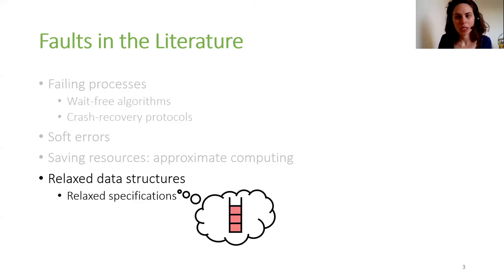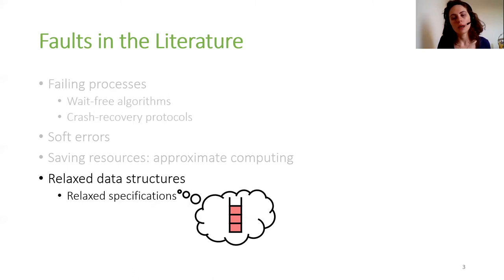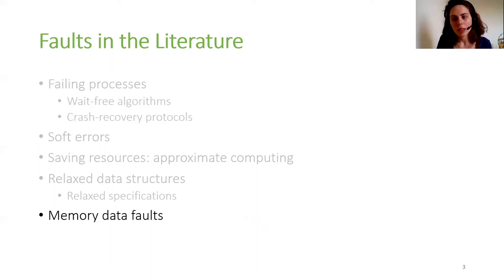Another related research area studies performance benefits obtained by allowing data structures to deviate from their original specifications. For example, a queue which does not guarantee that a pop operation will actually return the head of the queue, but some other queue item. Relaxed data structures are also a special case of functional faults.